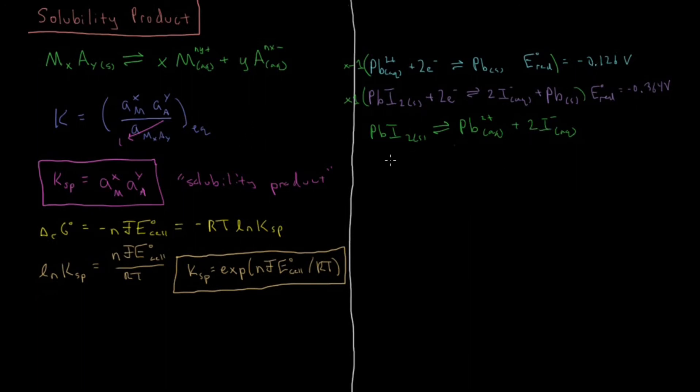So according to these values we have up here, our standard EMF for this reaction would be equal to, well that would just be the reduction potential here minus 0.364 volts minus the reduction potential of what gets oxidized, so we reverse this reaction, it gets oxidized, of minus 0.126 volts. So E0 cell for this reaction is going to be equal to minus 0.238 volts is our standard EMF for this reaction.